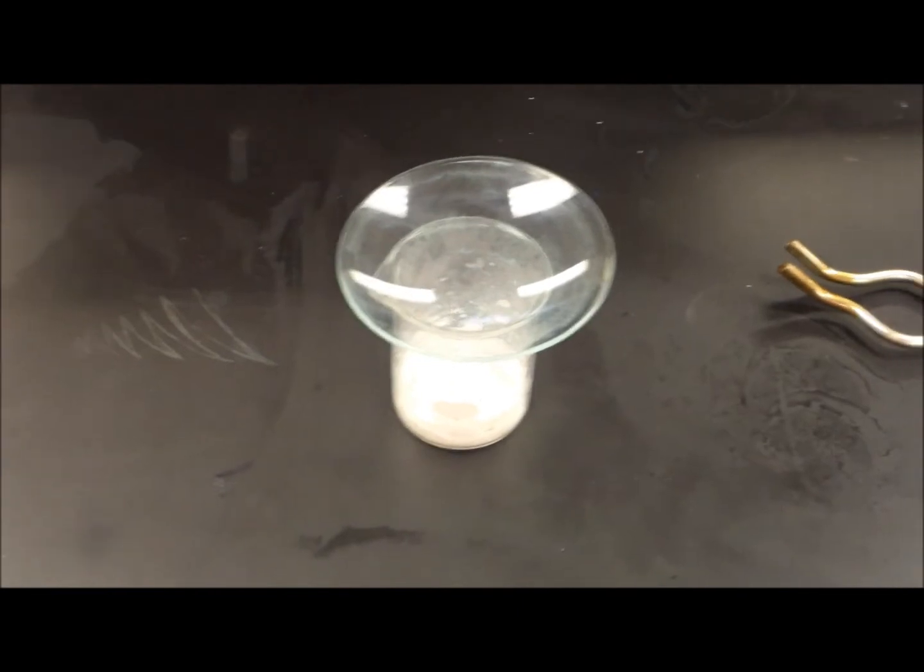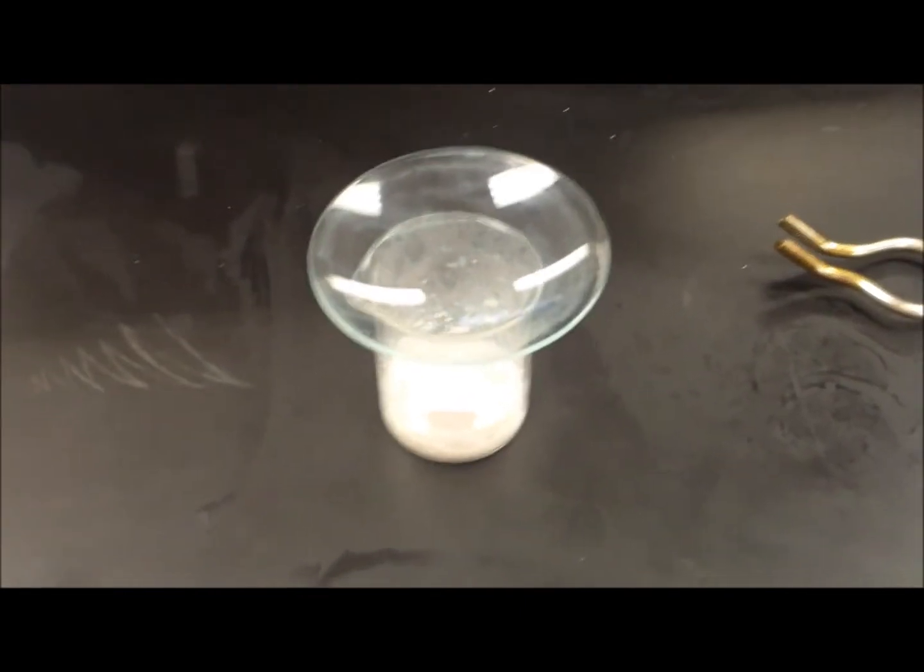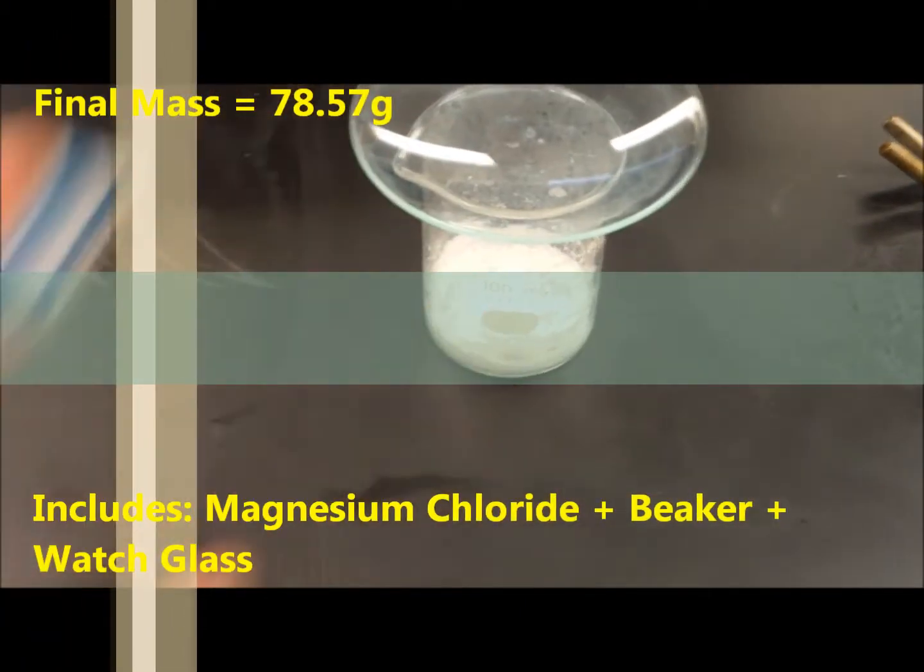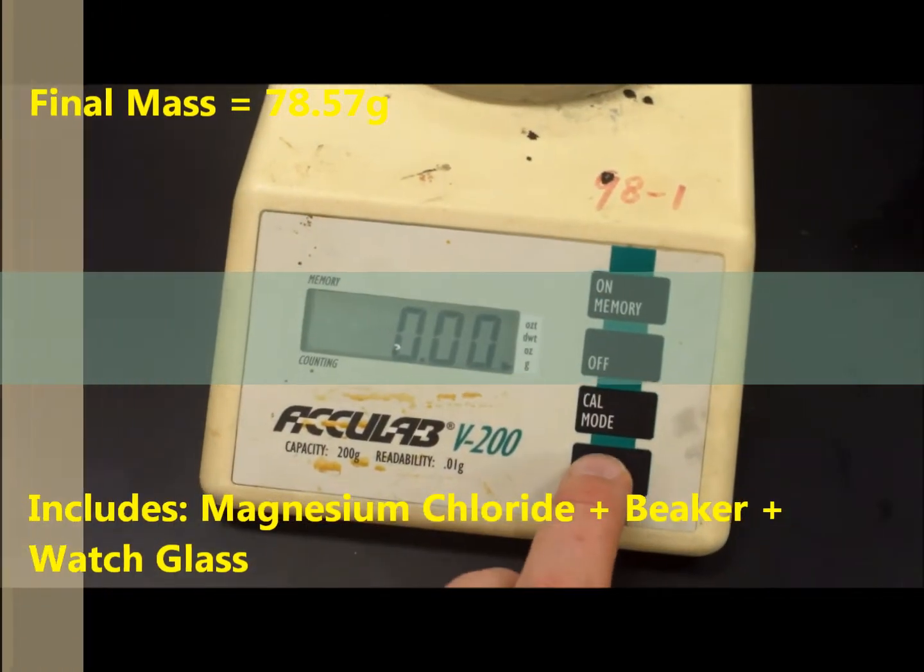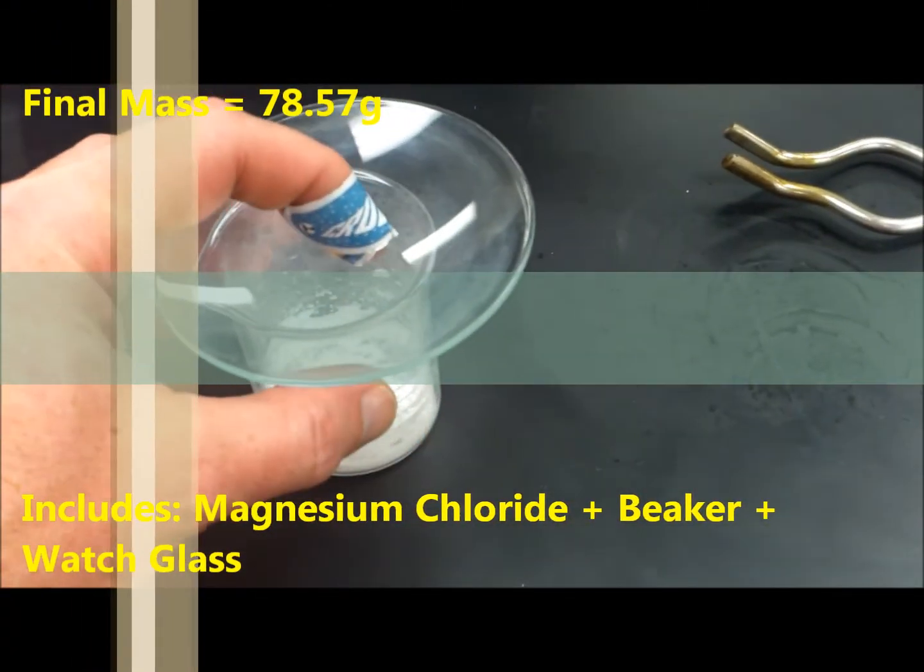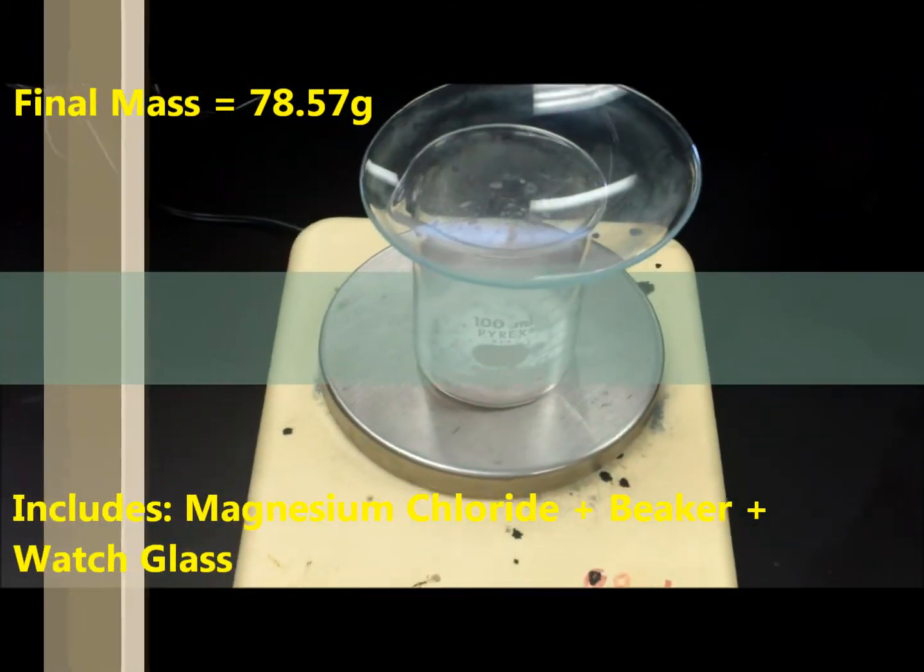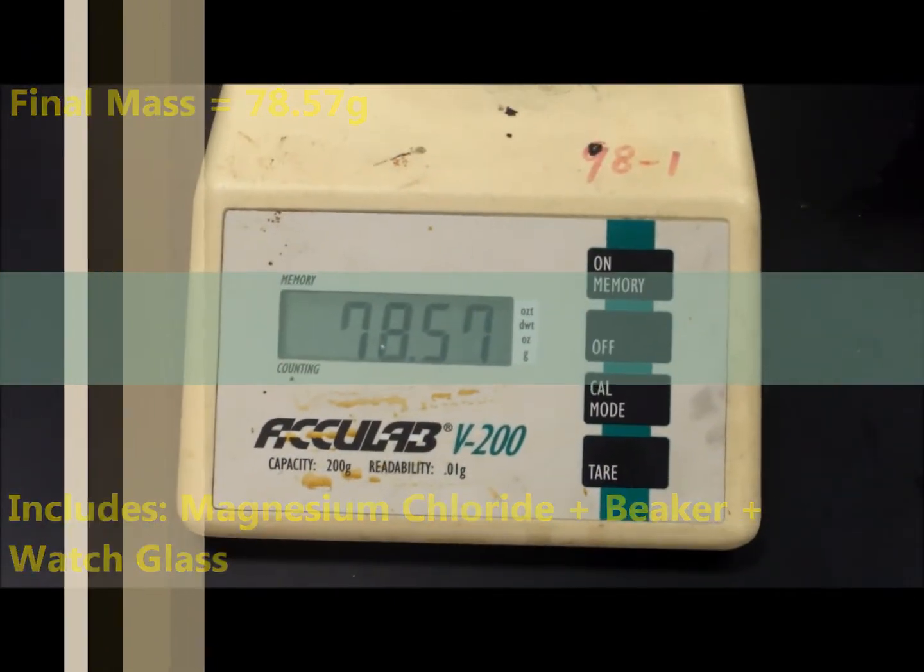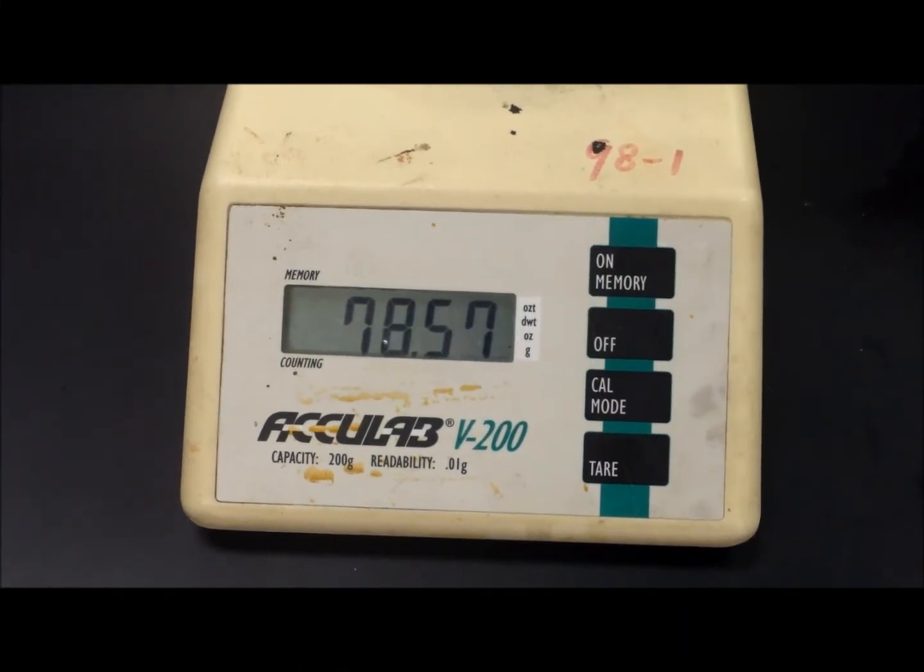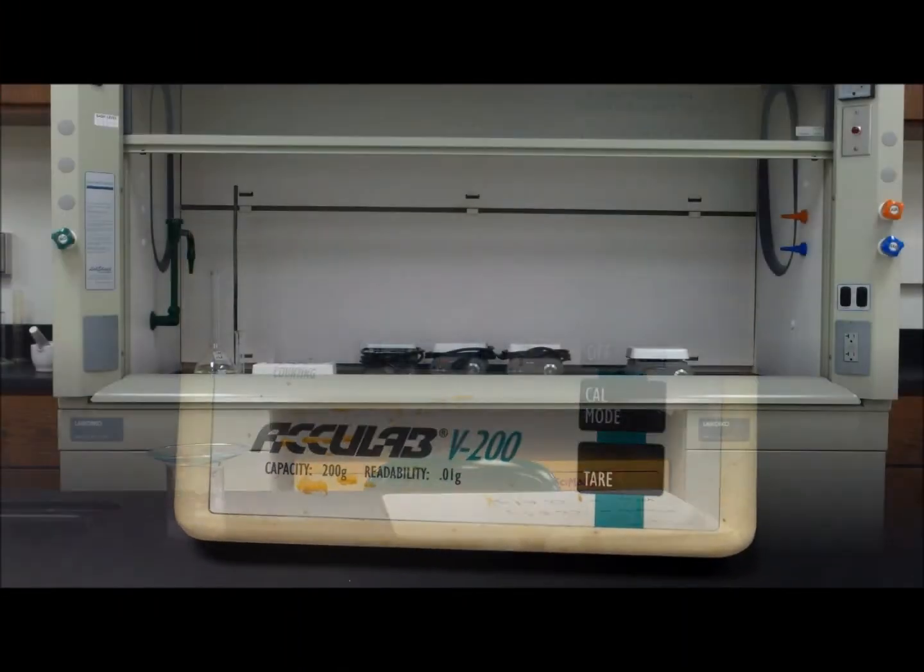All right, we're going to do one more mass measurement of our magnesium chloride sample. So let's go ahead and make sure this is zeroed. Take our sample and we're getting a mass of 78.57.